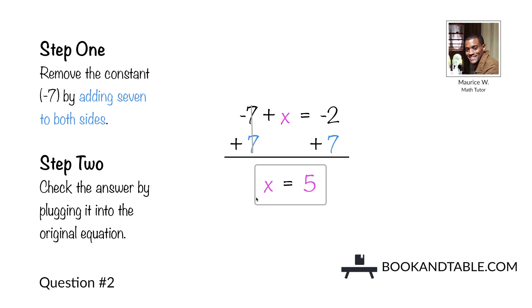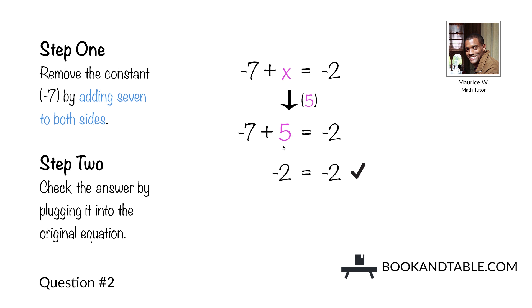Step two: check this answer by plugging it back into the original equation, negative 7 plus x is equal to negative 2, to make sure both sides are balanced. When we replace x with 5, we get negative 7 plus 5, which equals negative 2 on the left side — and that matches the value on the right side, negative 2. So this confirms that x is equal to 5.